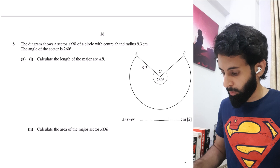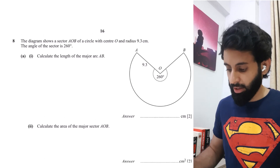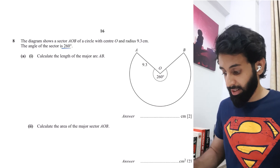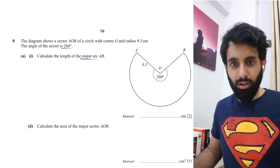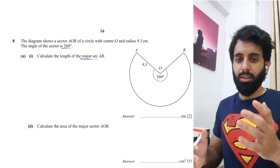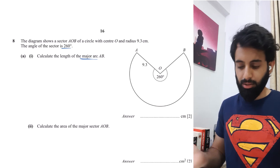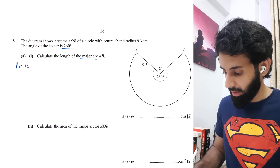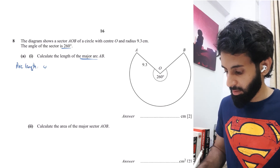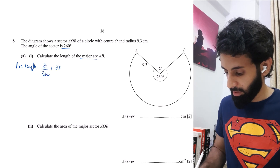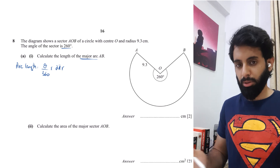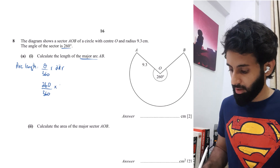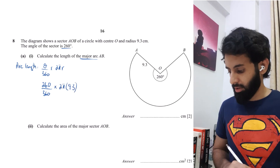The diagram shows a sector AOB of a circle with centre O and radius 9.3 cm. The angle of the sector is 260 degrees. Calculate the length of the major arc. The major arc is the larger of the two; the minor arc is the smaller. The formula for arc length is (θ/360) × 2πr, and the angle to use is the larger one: 260 degrees. So we calculate 260/360 × 2π × 9.3.